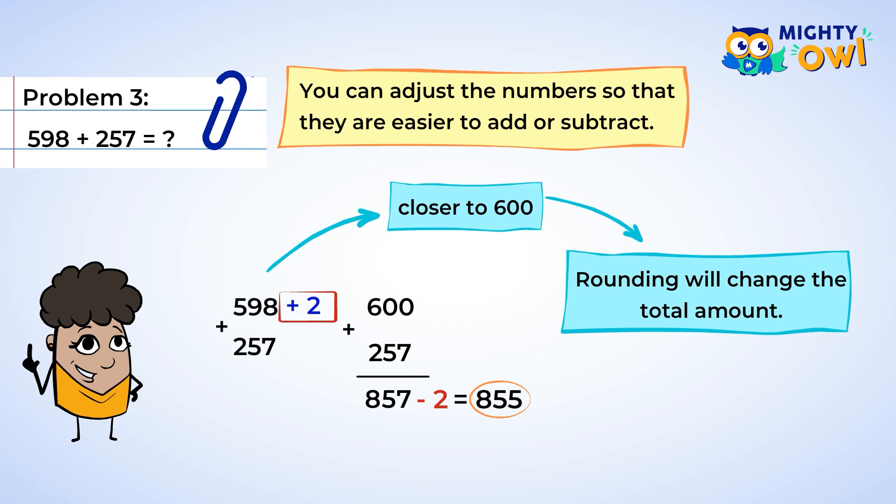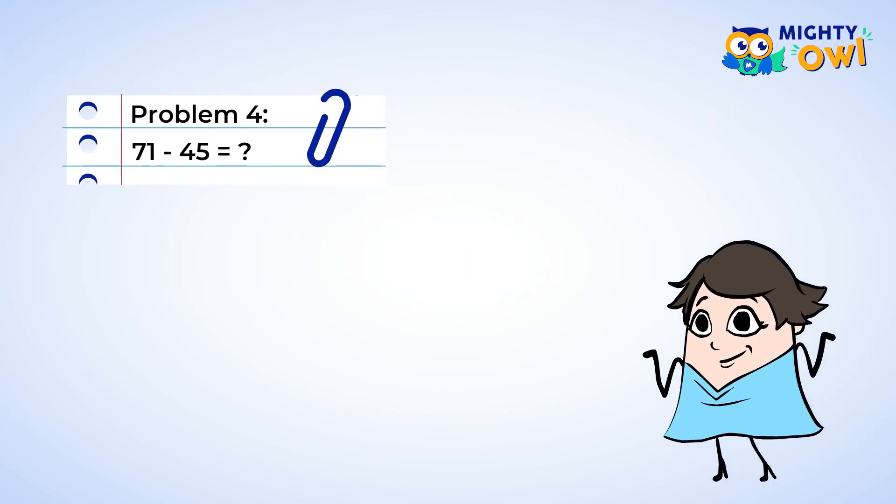Now it's time for subtraction. Okay, we have seventy-one subtracting forty-five. Sure, we can subtract the traditional way, but let me show you a different way that you may find easier. Seventy-one is one away from seventy. So let's take one away from seventy.